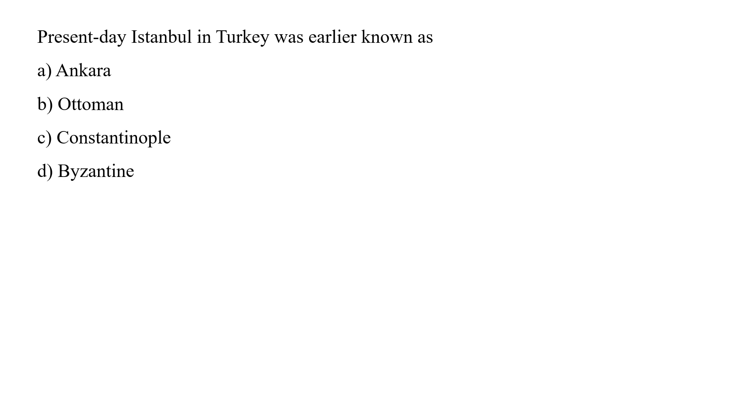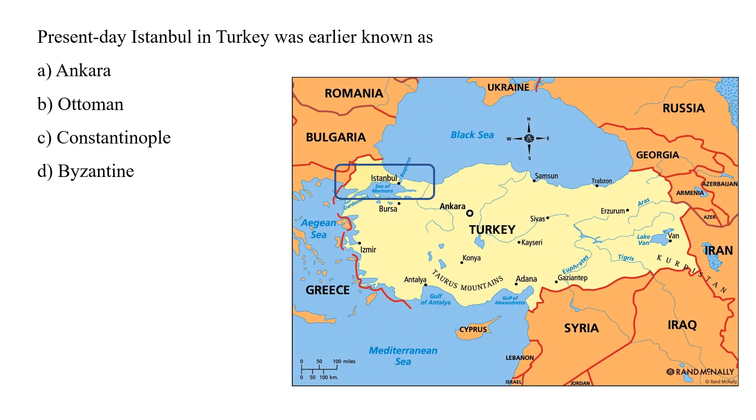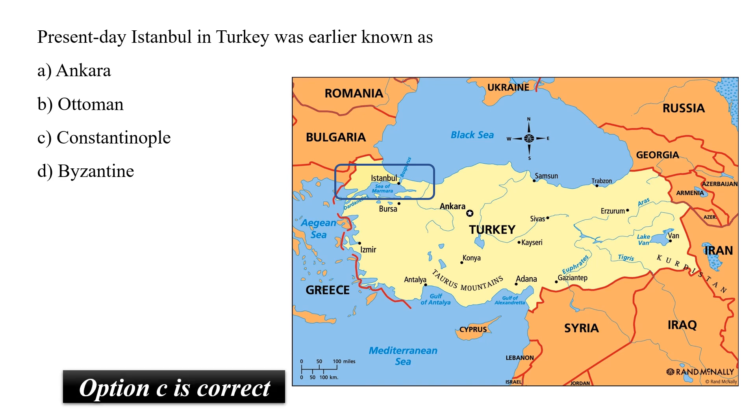Present day Istanbul in Turkey was earlier known as? Was it Ankara, Ottoman, Constantinople or Byzantine? Basically if you see the map, the Istanbul which was also known as earlier Constantinople, it was an important trade route which was connecting Europe, Russia and Asia. And this connecting link was very much entered in the past. So present day Istanbul is also known as earlier Constantinople. So option C is the correct answer.